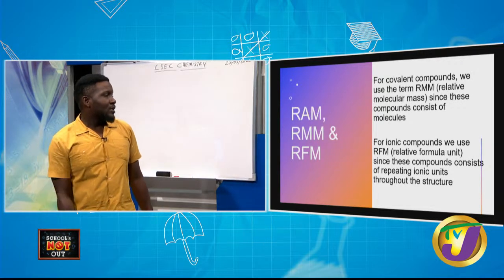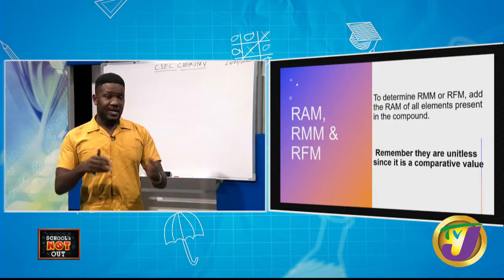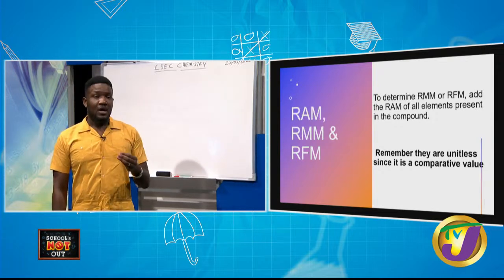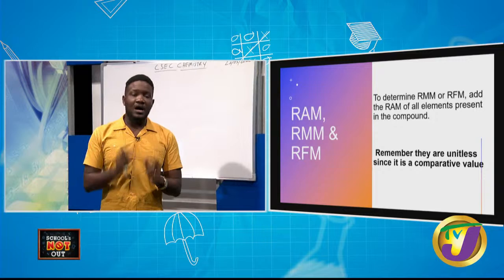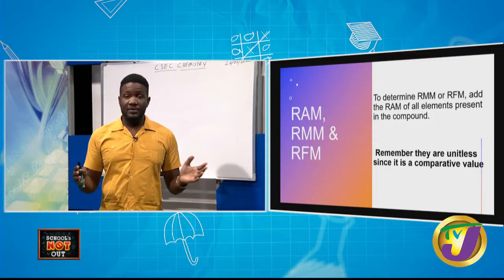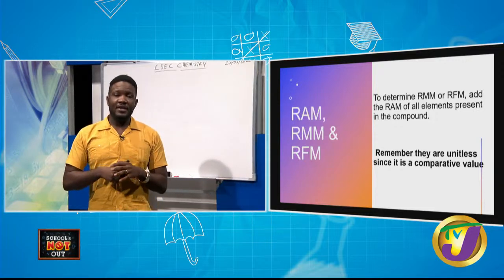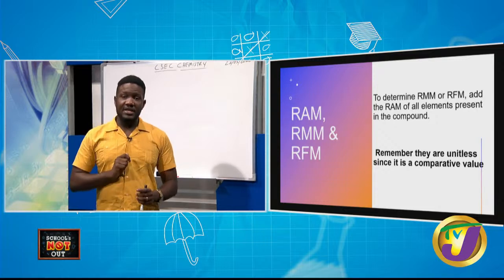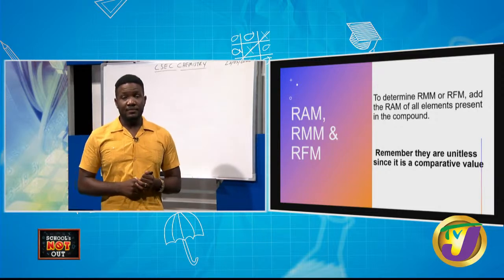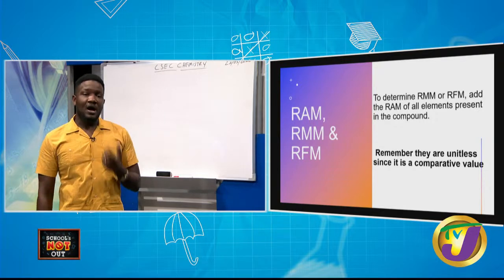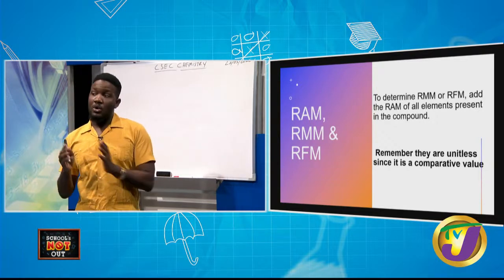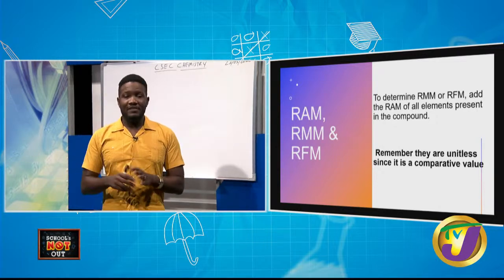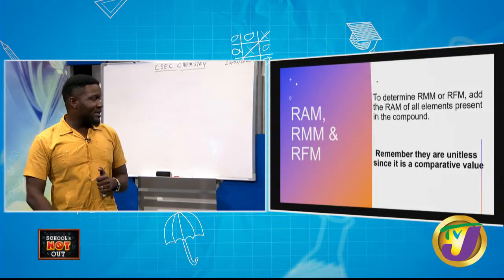To determine RMM or RFM, all you need to do is add up every single RAM in the compound. For glucose, you add how much carbon, hydrogen, and oxygen is in it. Since RMM and RFM are comparative values — we are comparing to carbon-12 — they don't have any unit.